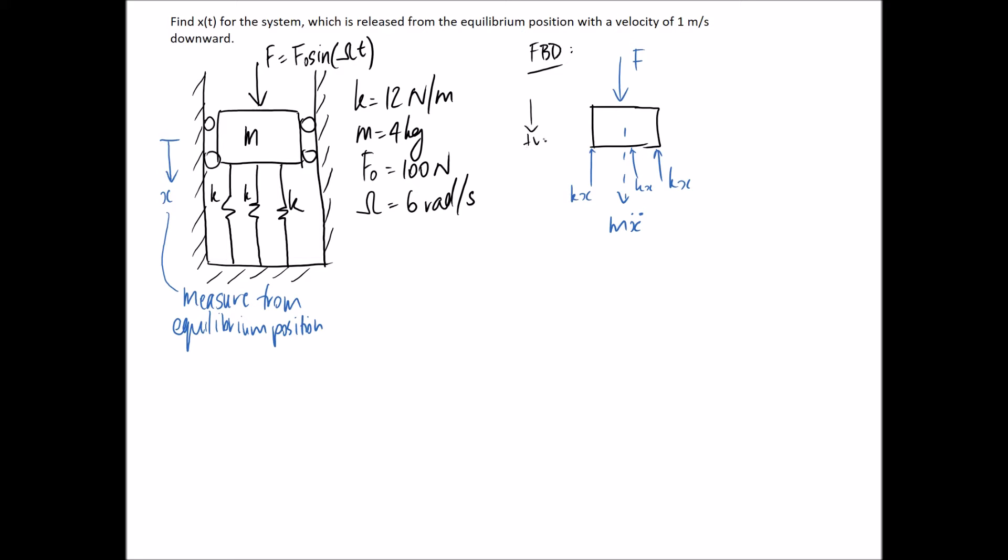This is my positive direction. I'm going to sum my forces to be equal to the mass times the acceleration. So I'm going to have positive F and I'm going to have negative, and there's three of them, so negative 3kx. And mx double dot is in the positive x direction, so I pop it in there as well, positive. So I want to put everything with an x on one side of the equation, everything without on the other. And now I'm going to divide through by m so that I get a 1 in front of this term.